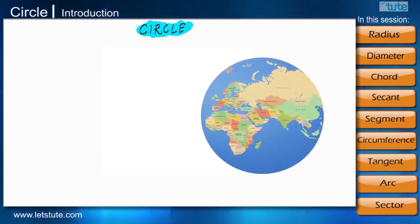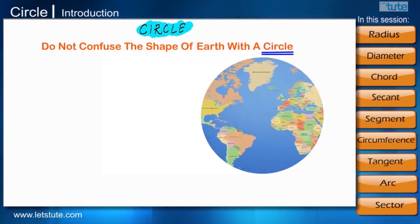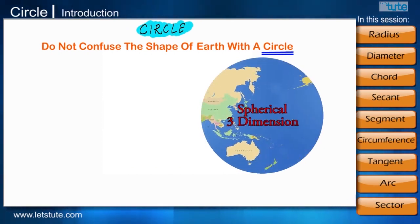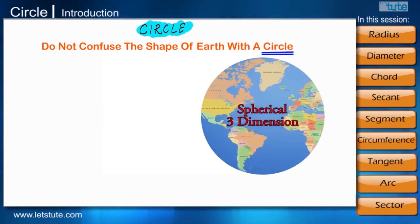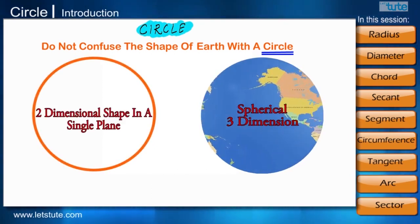Earth is not a circle. Do not confuse the shape of Earth with a circle. Earth is spherical in shape and three-dimensional in nature whereas a circle is a two-dimensional shape in a single plane.